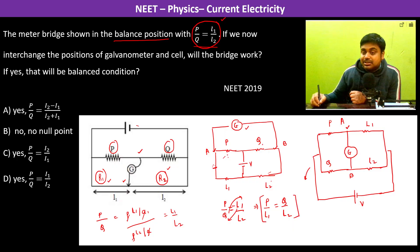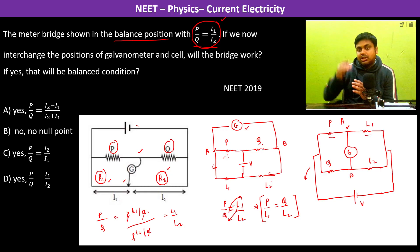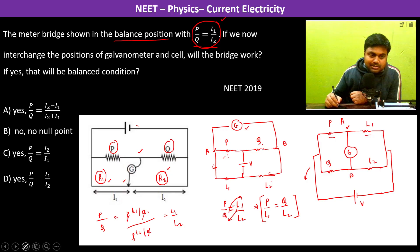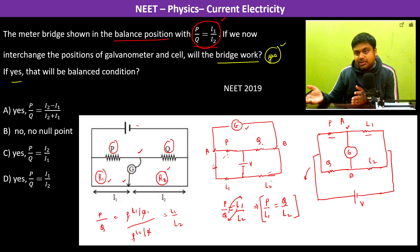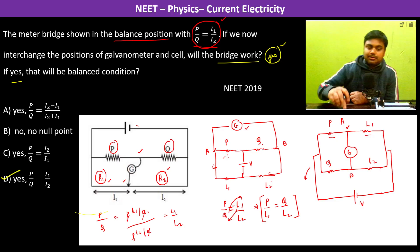Now again it is a balanced condition only because this is again proportional, both the resistances on either side are proportional. Therefore, yes it is a balanced condition. So will the bridge work? Yes, and the balanced condition is it is balanced only now. P by Q is equal to L1 by L2. Thank you.